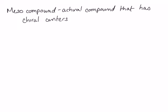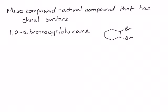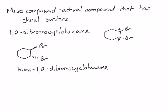We will start with 1,2-dibromocyclohexane. Each of the carbons that have a bromine have the potential to be chiral centers because they are sp3 hybridized carbons that have four different groups on them. We can put the top bromine coming out towards us and the bottom bromine going away from us — this is trans-1,2-dibromocyclohexane. This compound has a non-superimposable mirror image, and because these are non-superimposable mirror images, they are enantiomers.